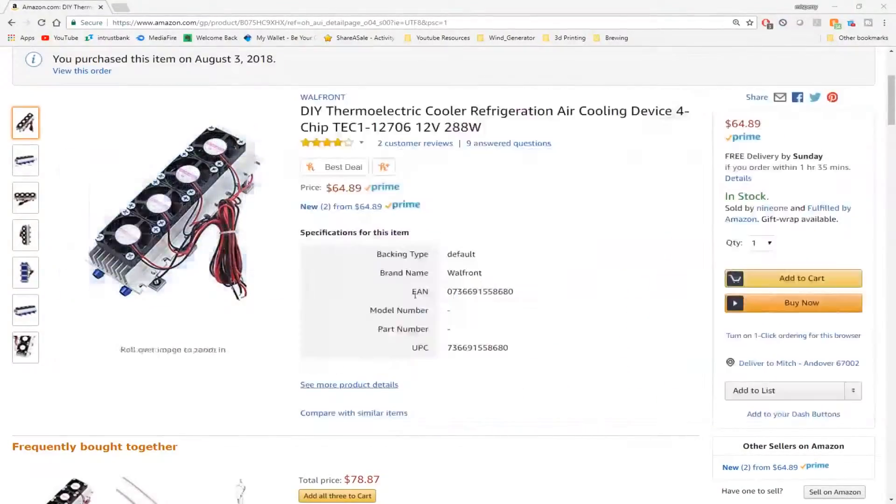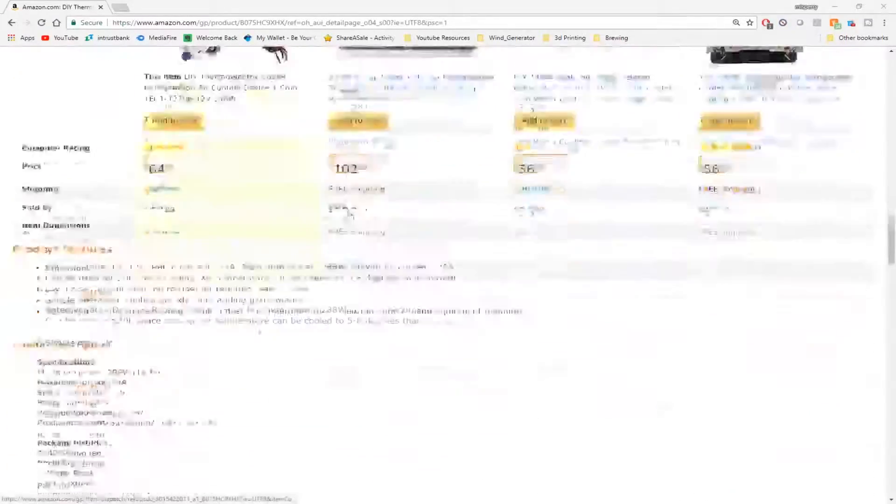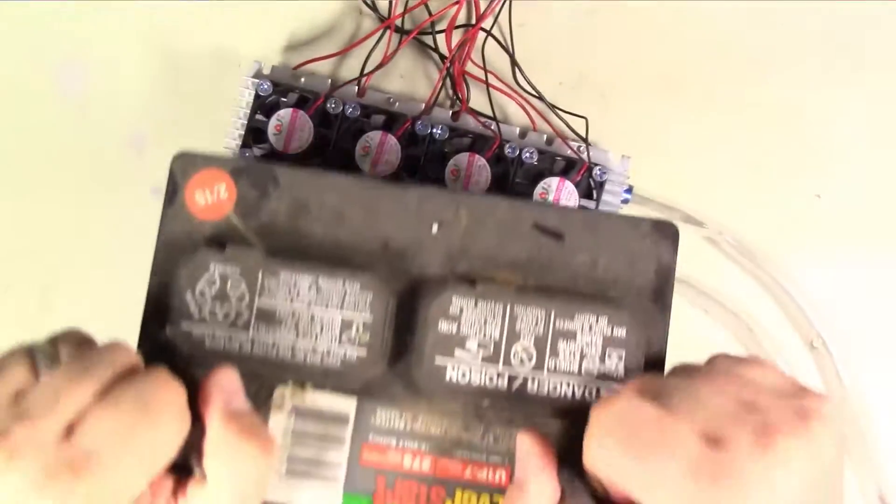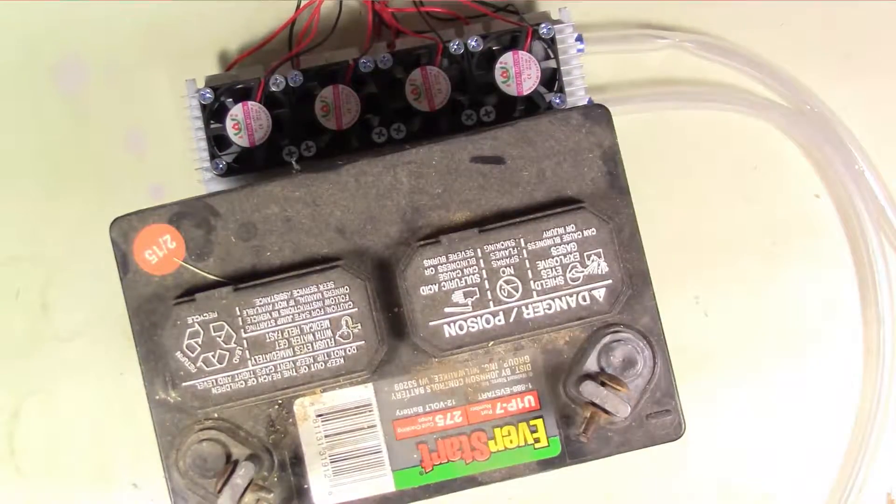Okay guys, so now looking at this thing, the specs on this bad boy, it looks like it can take a rated current of 17 amps at 12 volts and a maximum of 24 amps. So for a maximum of about 288 watts of power. So that's way more than my power supply can do. So we're going to need to find a solution. Lawn mower battery. Yes.